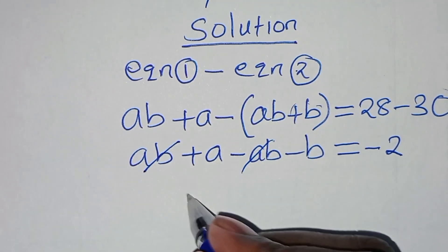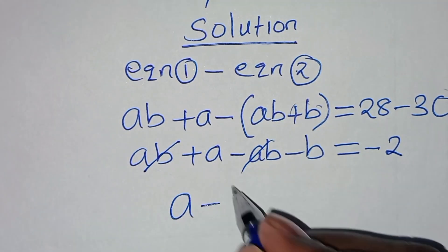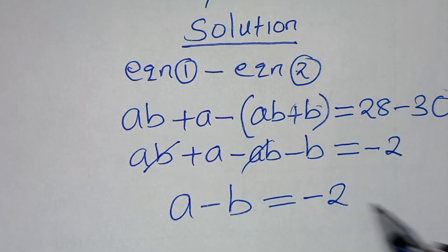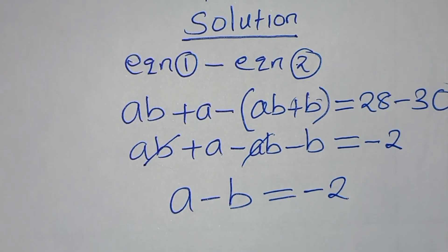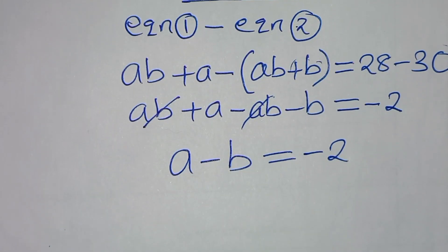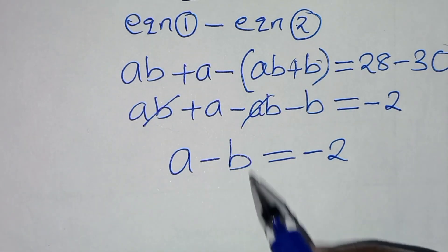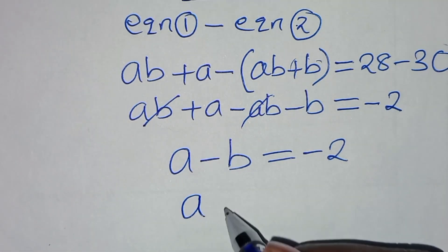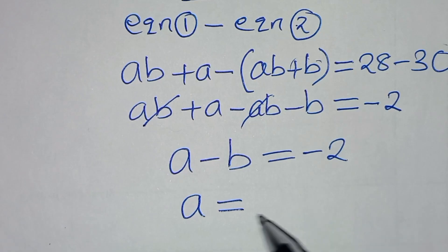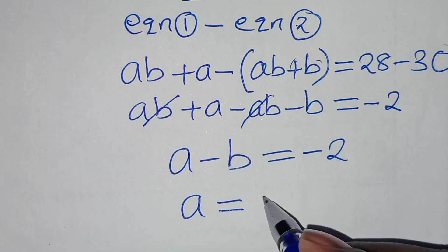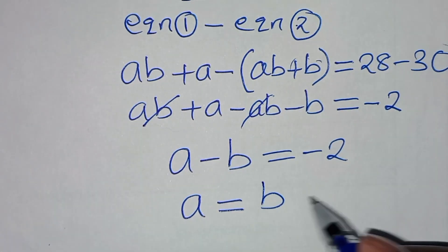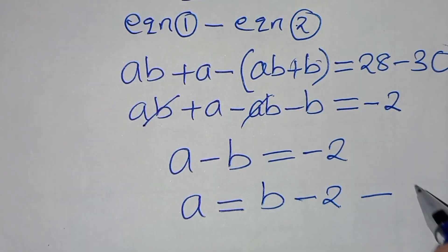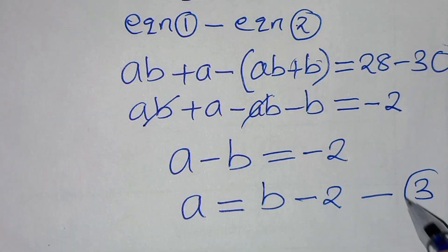After simplification, ab minus ab cancels, and we have a minus b = minus 2. From here we can make a the subject of the formula, so a = b minus 2. Let's call this equation 3.